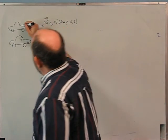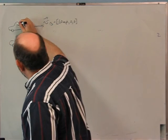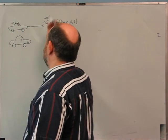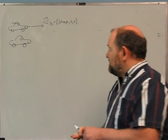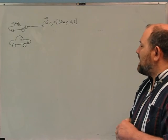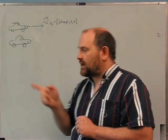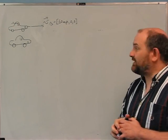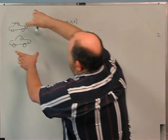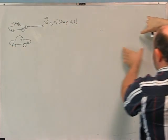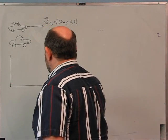At t = 0, car B passes me and I start accelerating. I speed up and eventually catch up. On an x-vs-t graph, car B moves at constant speed — a straight line — while car A starts with zero slope (at rest) and curves upward due to acceleration.